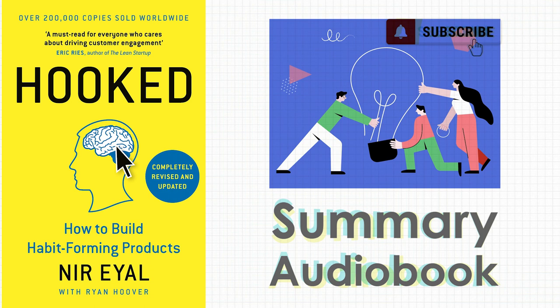One heuristic is the framing effect — placing something in a different context changes its perceived value. If the world's best violinist plays in a subway, they won't get as much attention as they would in a concert hall. Another is scarcity: people are more compelled to buy when they know limited stock remains. Considering heuristics during the design stage makes your product easier to use, increasing its habit-forming potential.